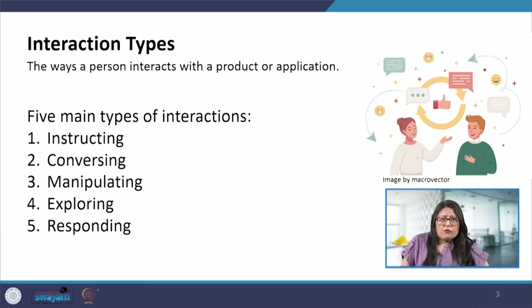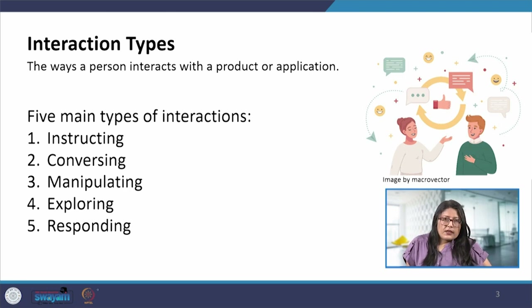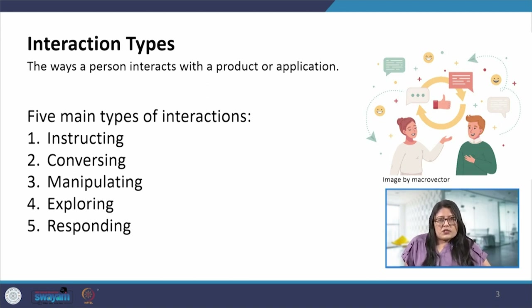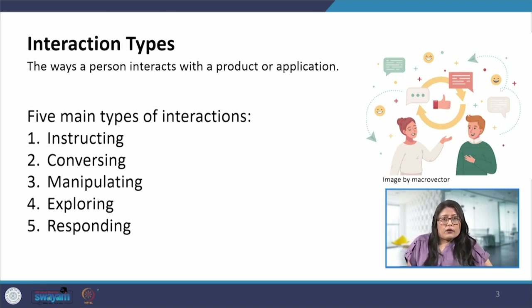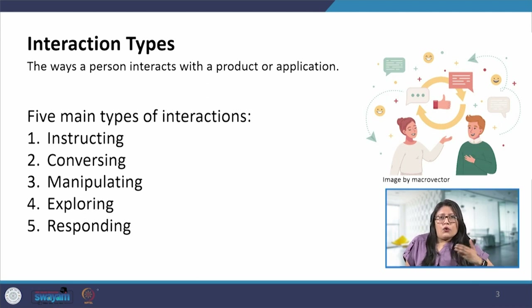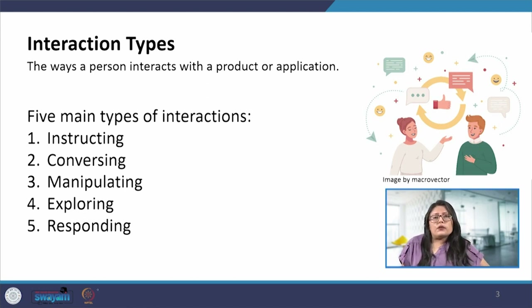Today we will continue with conceptual design and look at the interaction types. One way of conceptualizing the design space is to look at the interaction types that will define the user experience — these are basically ways in which the user will interact with the product or application. For example, when Amazon suggests an item based on past purchase behavior, or when Netflix pauses viewing to ask whether the user would like to continue watching.